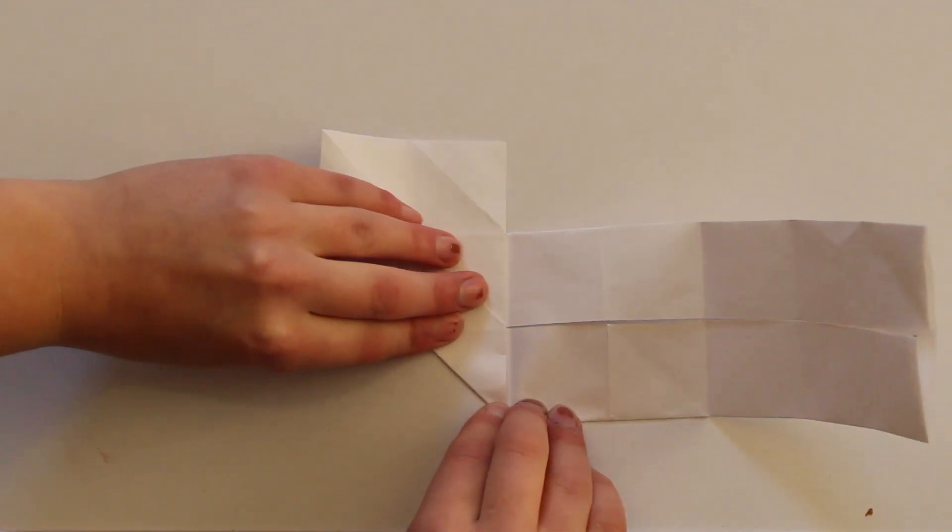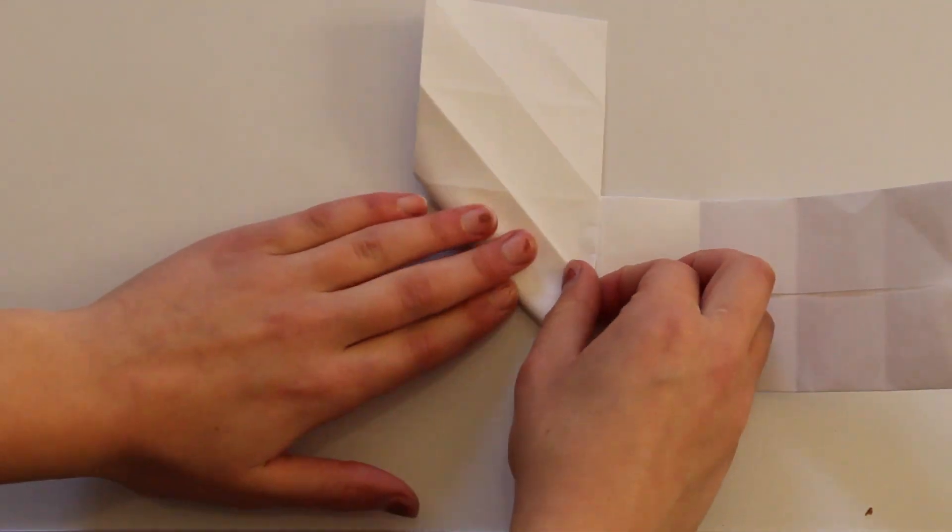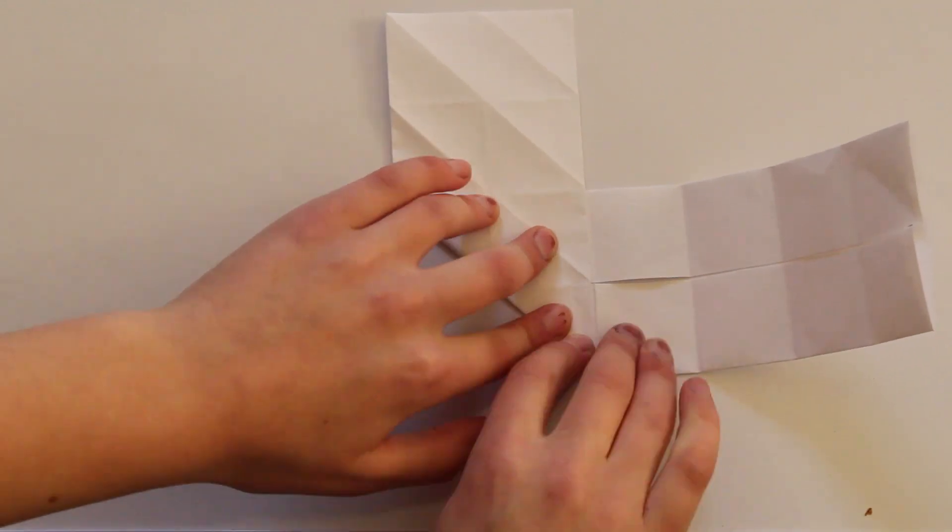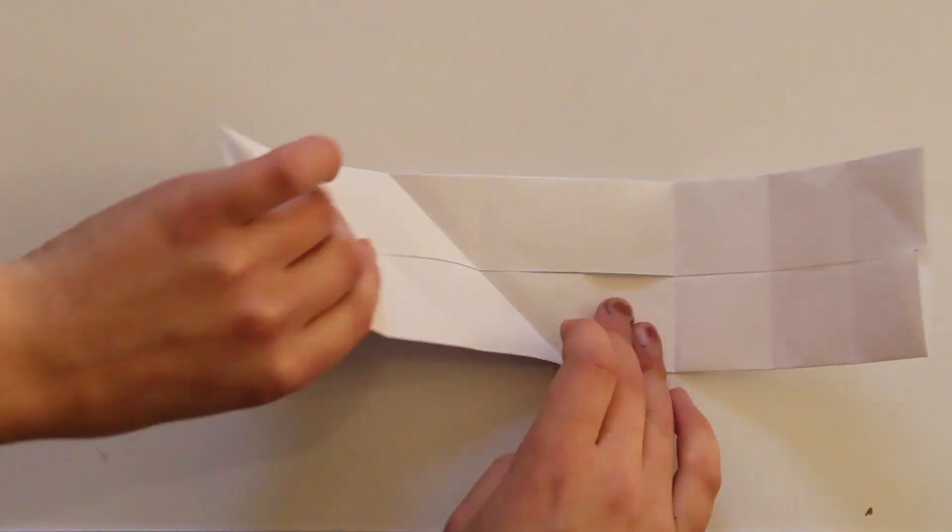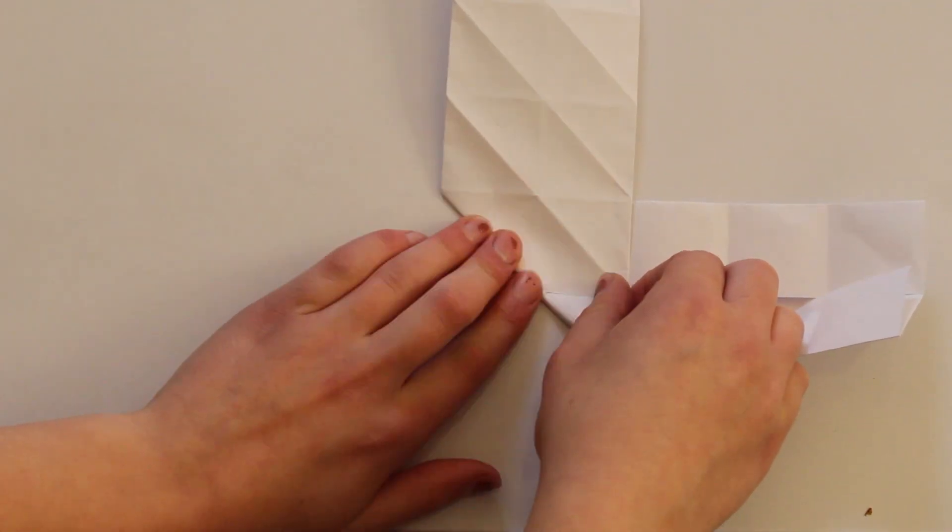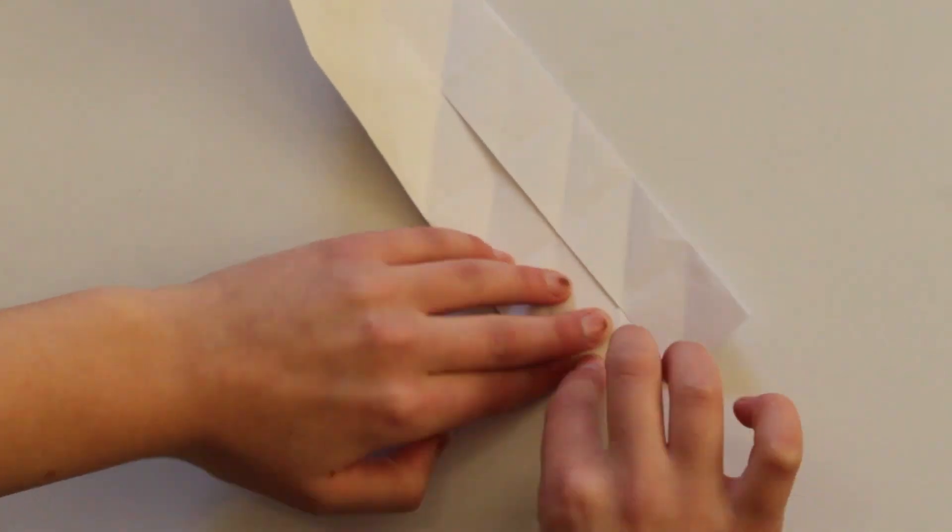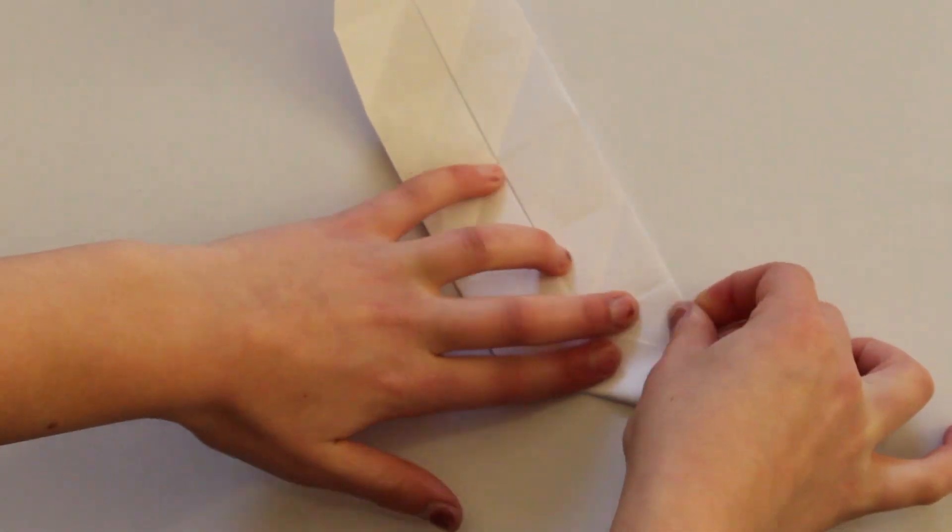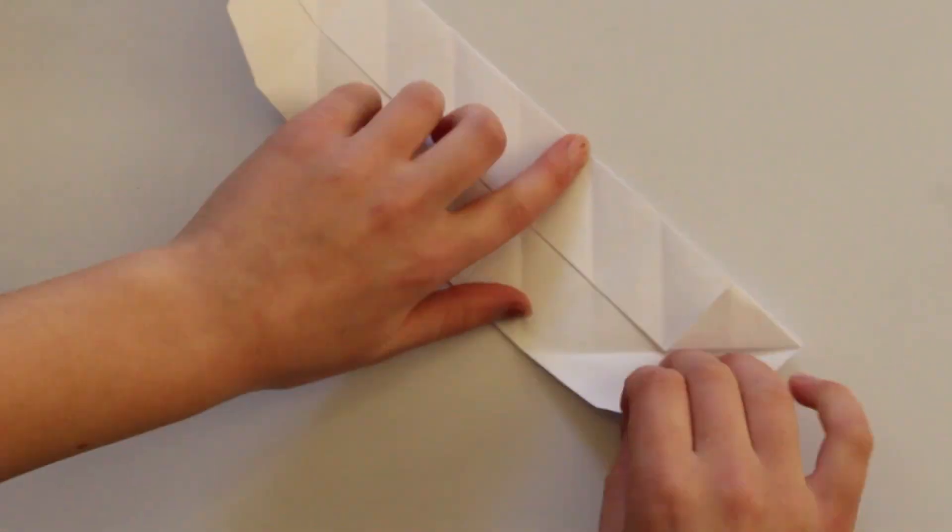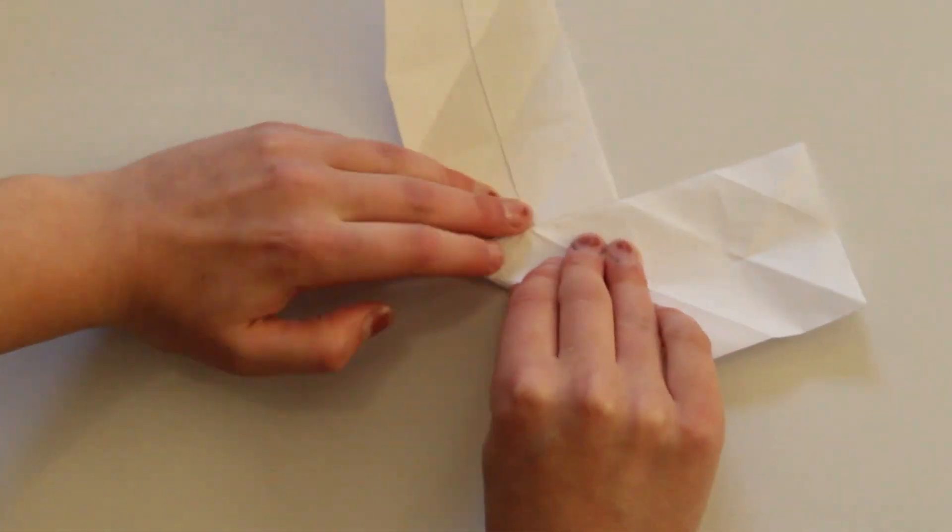Again, we want to make sure we have very nice crisp creases to ensure that our hexahydroflex will go the right direction, because that was my pitfall the first time I did this. So now that I have creases going one direction, I'm going to do the exact same thing along the other diagonals. And also make sure that you are lining things up as best you can.